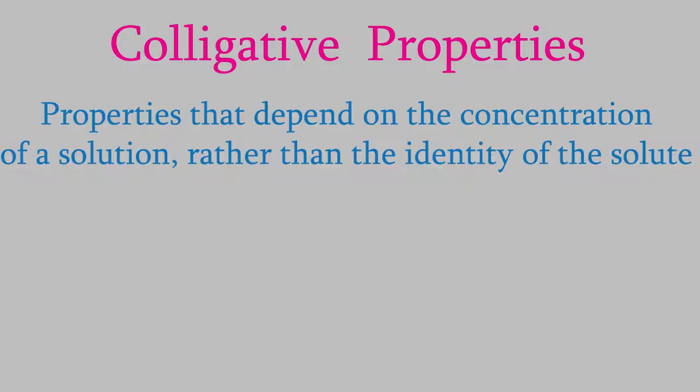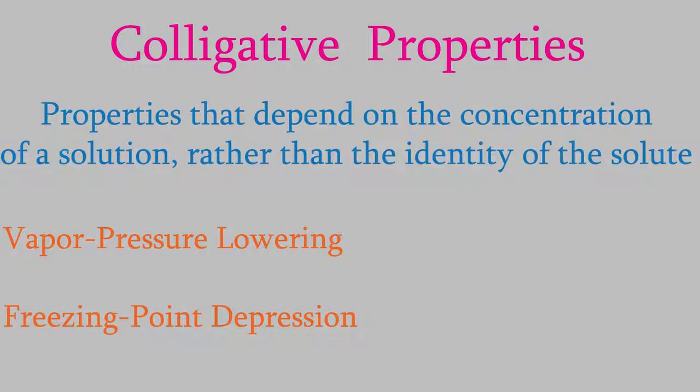As you might remember, colligative properties are four phenomena that occur when we form a solution by combining a solute with a solvent. To refresh your memory, what makes a colligative property different from other properties is that they depend on the concentration rather than on the identity of the solute. The four colligative properties are vapor pressure lowering, freezing point depression, boiling point elevation, and osmotic pressure.